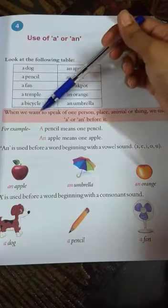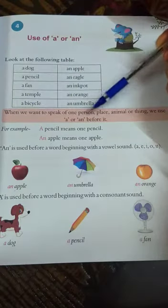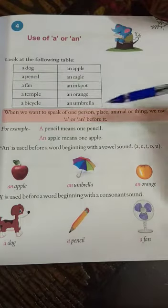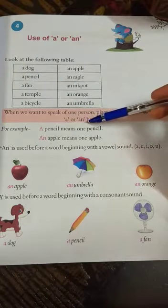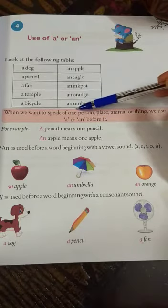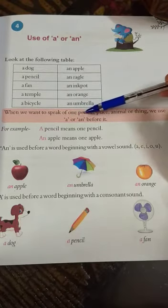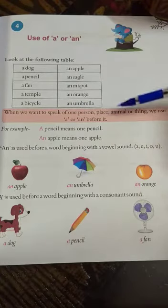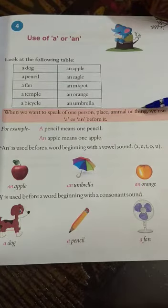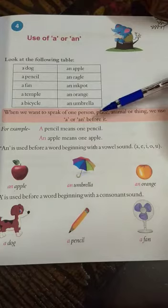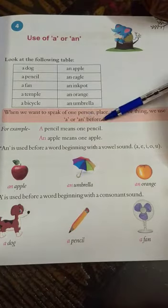When we want to speak of one person, place, animal or thing, we use A or AN before it.